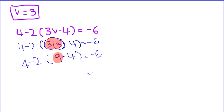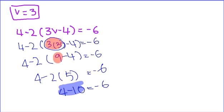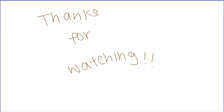PEMDAS tells you to do the bracket first. The bracket will equal 5. So 4 minus 10 is equal to negative 6. Negative 6 equals negative 6, so my answer is correct. V is equal to 3. Thank you for watching.